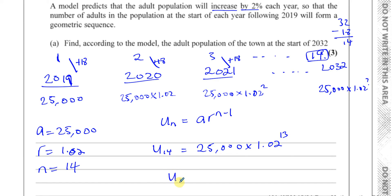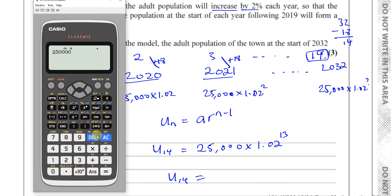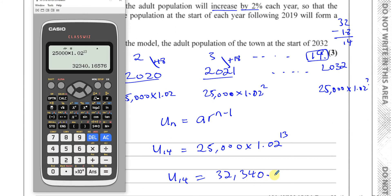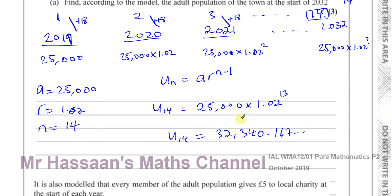Calculating 25,000 times 1.02 to the power of 13 gives approximately 32,340. Since the answer is not exact, we round to three significant figures, giving 32,300. That's the answer for part A.